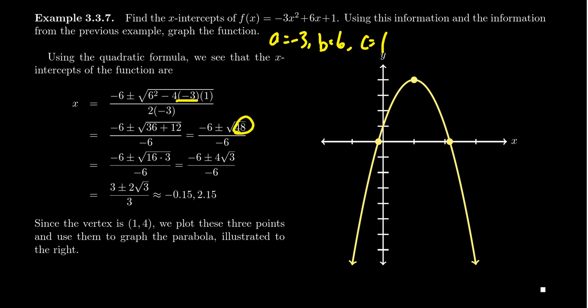3 plus 12 is 48. Now, 48 itself is not a perfect square, but it does have 16 as a divisor. 48 is 16 times 3. The square root of 16 is then 4. So you get negative 6 plus or minus 4 times the square root of 3 over negative 6.